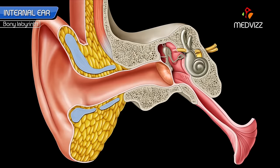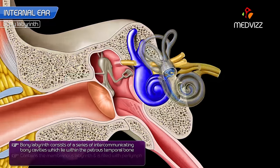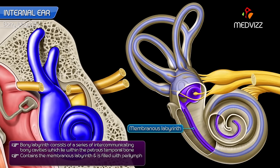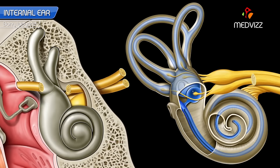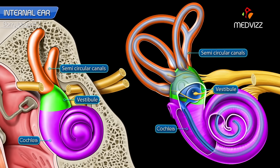The bony labyrinth consists of a series of intercommunicating bony cavities which lie within the petrous temporal. It contains the membranous labyrinth and is filled with perilymph. It is about 18mm in length. The bony labyrinth has three parts: cochlea, vestibule, and three semicircular canals.